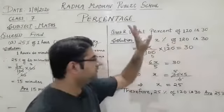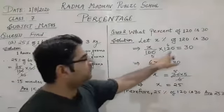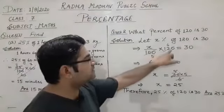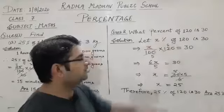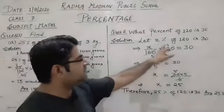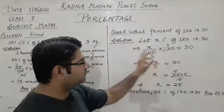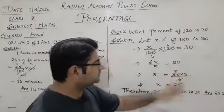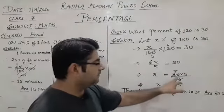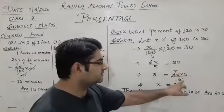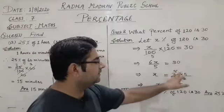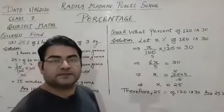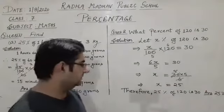Now 100 and 120 are both divisible by 20: 5 twenties are 100 and 6 twenties are 120. So we get 6x upon 5. On cross multiplication we get 30 into 5 upon 6. Dividing 30 by 6: 6 ones are 6, 6 fives are 30, and 5 fives are 25. So the answer is 25 percent.